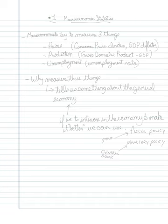So let's start with an overview of major macroeconomic statistics. Essentially, macroeconomists are trying to measure three things: prices, production, and unemployment.